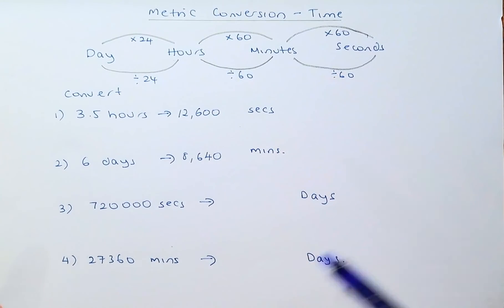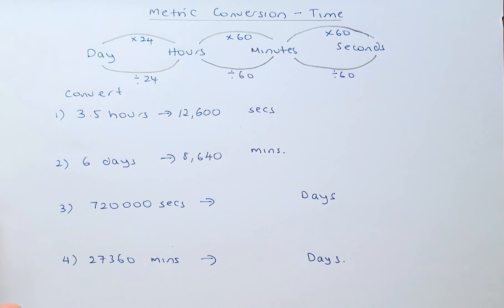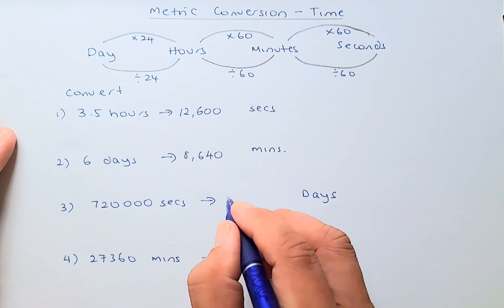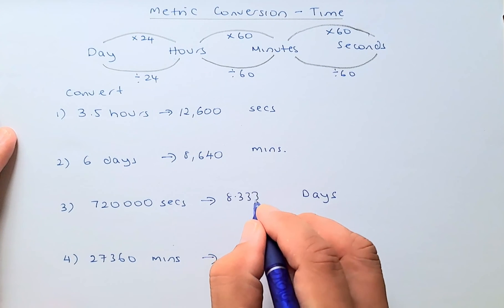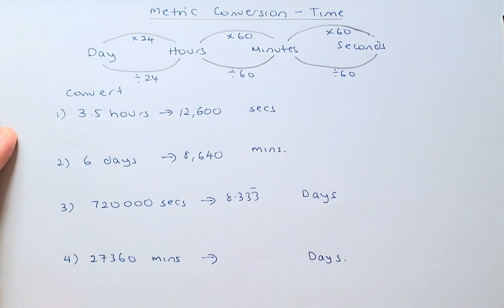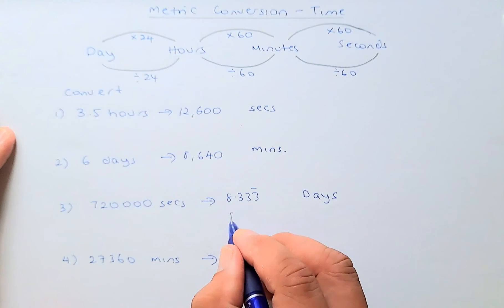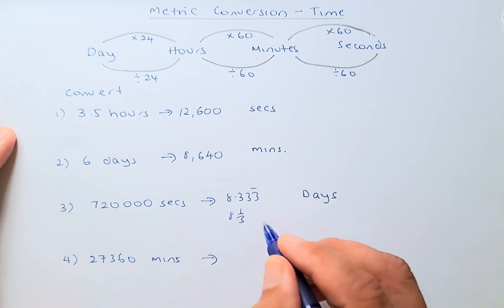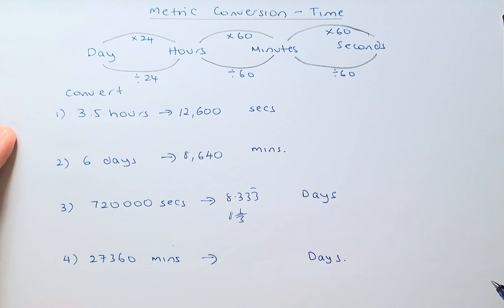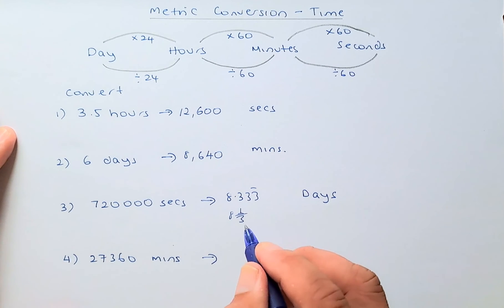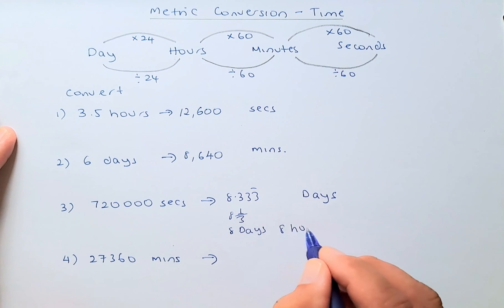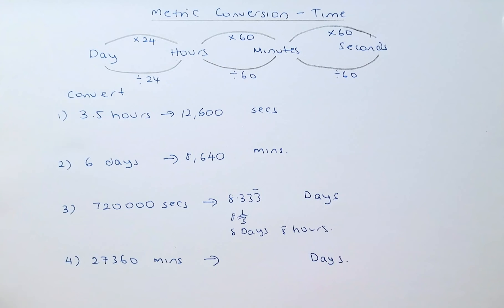Use the calculator: 720,000 divided by 60 first, then divide by 60 again and then divide by 24, and the answer is 8.33 days recurring. 8.33 days is the same as 8 days, or 8 and 1/3 days. So 1/3 of a day is 8 hours. So it's going to be 8 days and 8 hours. That's how you calculate the number of days from seconds.